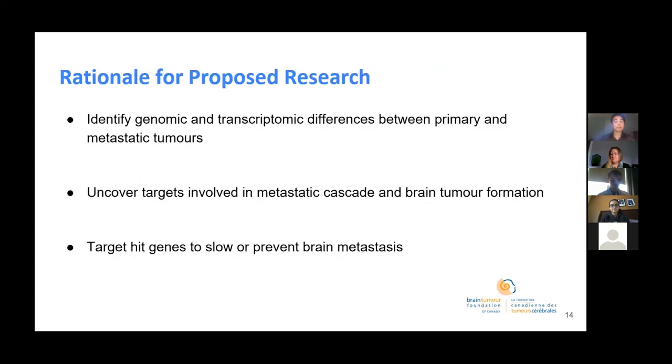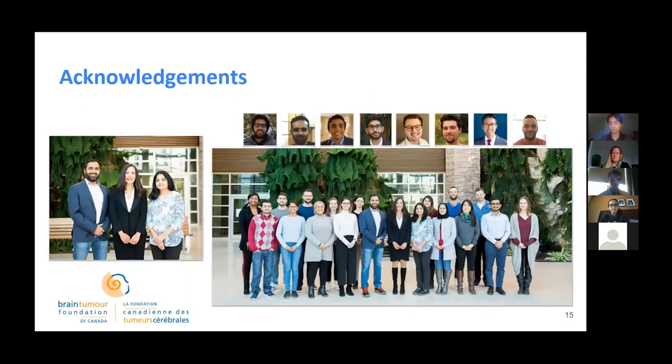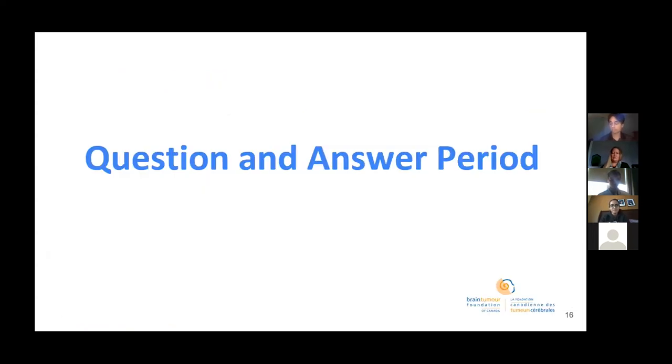After these studies, we want to talk about the rationale of the research. In conclusion, if we're able to identify genomic and transcriptomic differences between the primary and secondary tumors, we could uncover targets in lung to brain metastasis with the overarching goal of blocking this process through targeted therapies. We would like to thank Dr. Sheila Singh, Dr. Chitra Venugupal, and our entire lab team for their continuous support. Without them, this presentation would not have been possible. We would also like to thank the Brain Tumor Foundation of Canada for giving us an opportunity to share our project. Thank you for listening to our presentation.